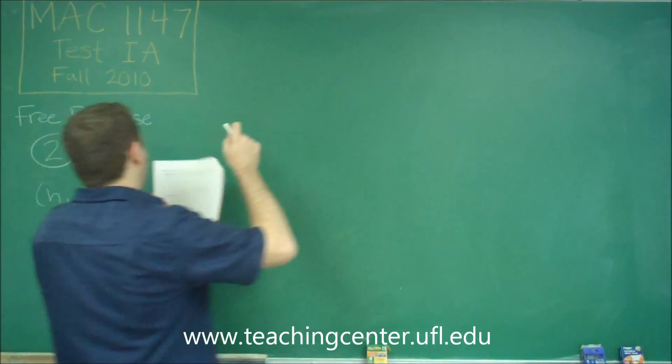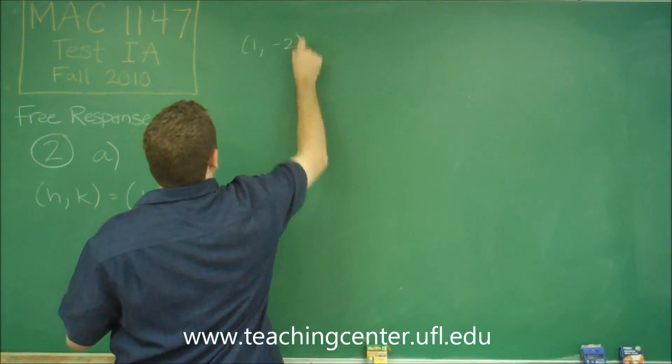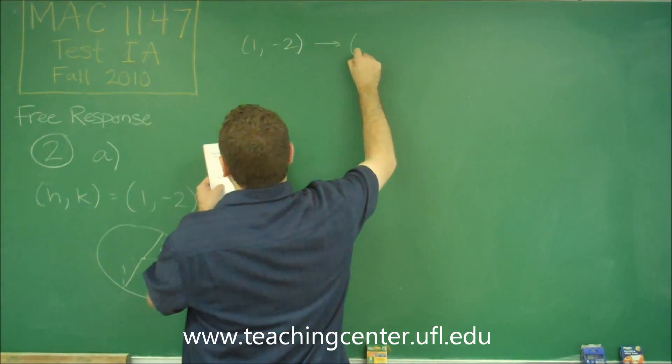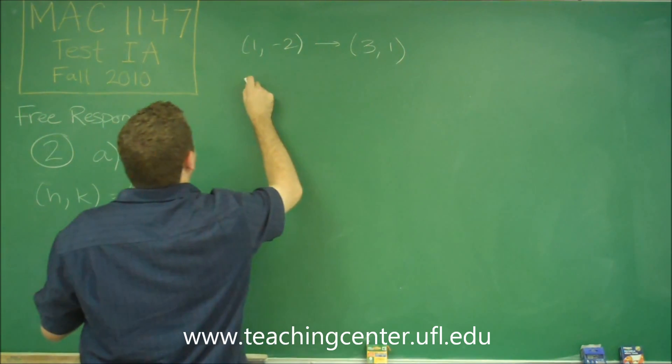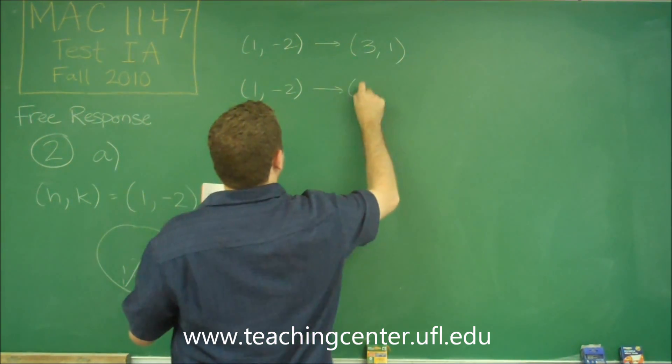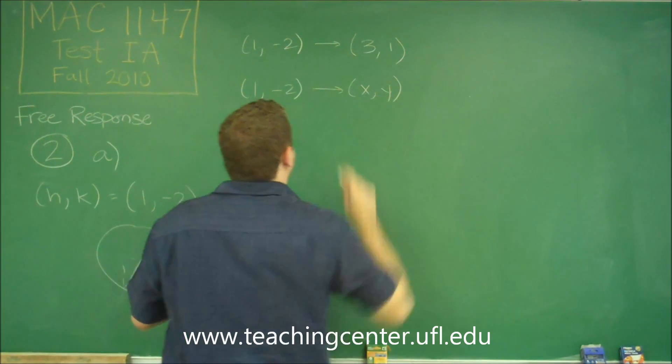So we can just think about it like that. So our one point that we do know is the center, and we're going to the point (3,-1). And then the other point is when we don't know, (x,y).